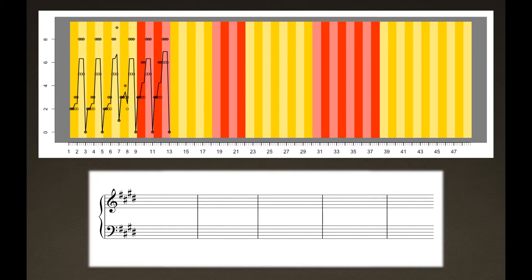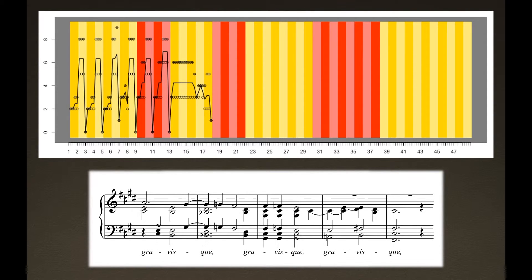The next section features an extended series of three-pitch-class sets. Although this section is composed largely of triads, these triads are arranged according to contrapuntal sequencing rather than harmonic progression. This section is particularly interesting in that it features the first cadence that resolves rather than expands. However, the final pitch set is a perfect fifth doubled in octaves — a harmonically stable arrangement, but not technically a chord by traditional tonal definitions.